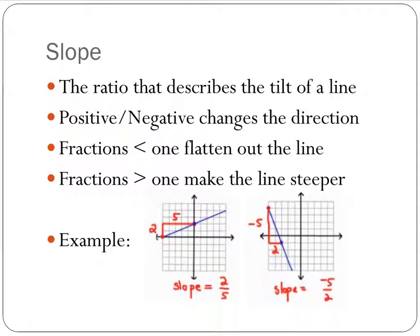Here we have the definition of slope and you want to maybe pause to write this down. The ratio, remember that's fraction, that describes the tilt of a line. Positive and negative changes the direction. For instance, positive goes up and we always count slope left to right. So up left to right is positive. Down left to right is negative.